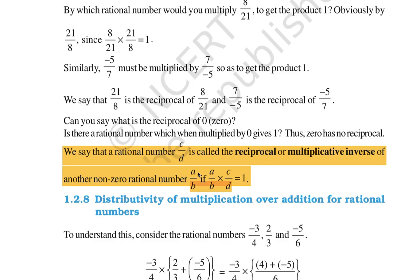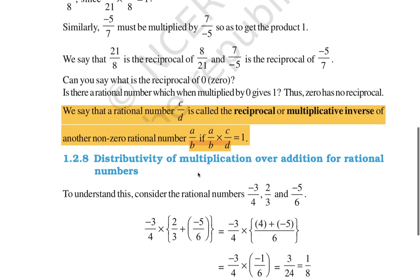For example, take the number 5. Its reciprocal or multiplicative inverse is 1 by 5, because 5 multiplied by 1 by 5 equals 1. So 1 by 5 is the multiplicative inverse of 5.